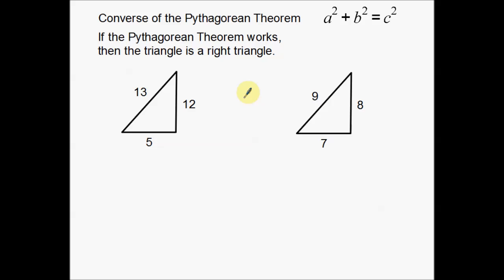So what we can do is actually attempt to use the Pythagorean Theorem and figure out if these triangles, these two triangles that I have, these examples right here, we're going to see if they are in fact right triangles or not by using the Pythagorean Theorem.